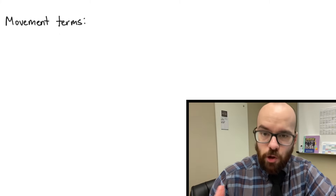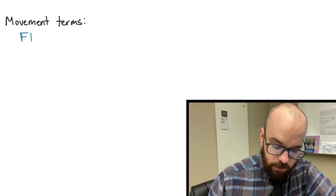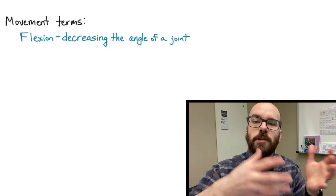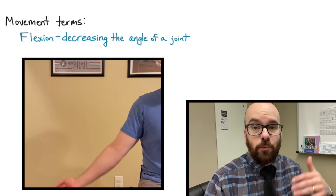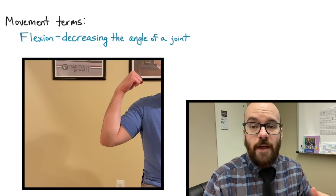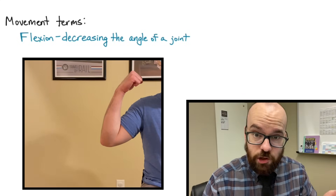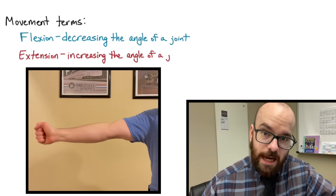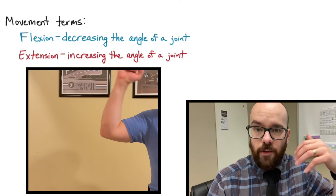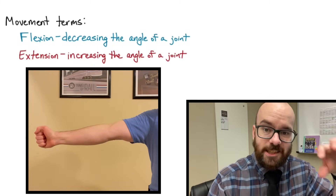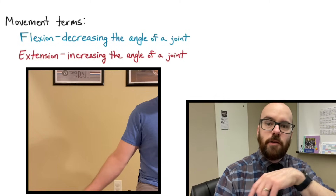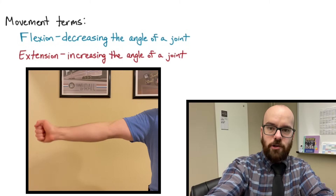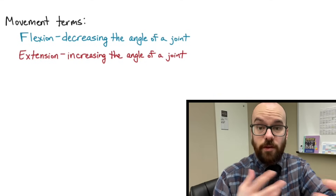There are several terms we need to learn. The first is flexion — flexion is anytime you're taking a joint and decreasing the angle of it. For example, whenever you contract the bicep muscle and bend the elbow, that's flexion. The opposite movement, extending the elbow or increasing the angle of that joint, is called extension. Flexion and extension are opposites of each other.